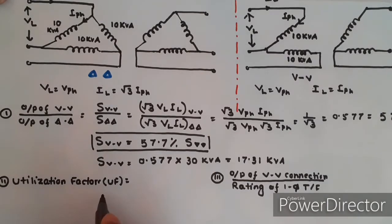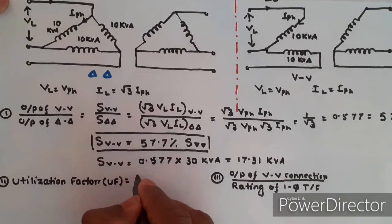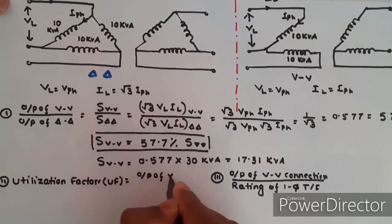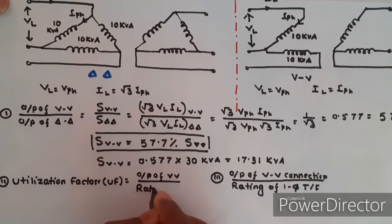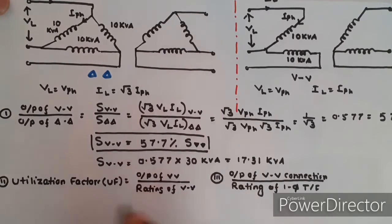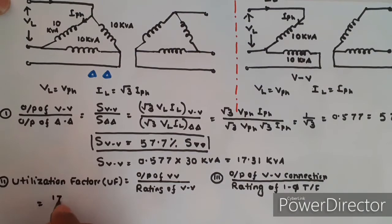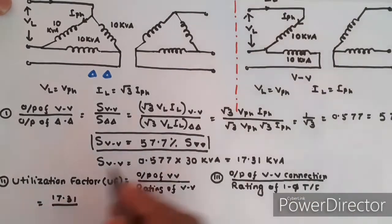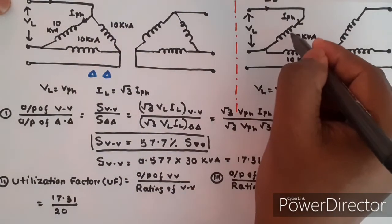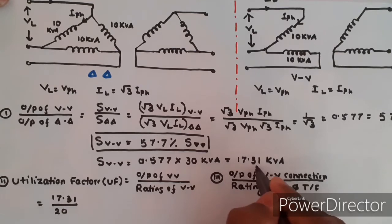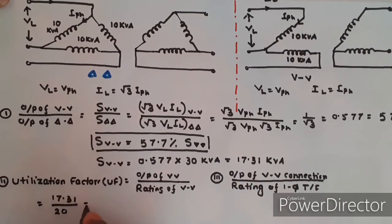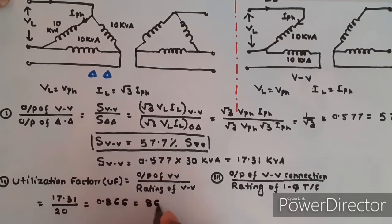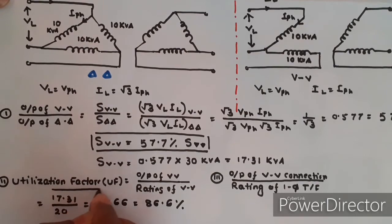Next, the utilization factor is the ratio of output of the V-V connection divided by the total rating of the V-V connection. The output of the V-V connection is 17.31 kVA, and the total rating of the V-V connection is 10 + 10 = 20 kVA. Therefore, out of 20 kVA rated capacity, we get a maximum output of 17.31 kVA, giving a utilization factor of 0.866 — that is 86.6 percent.